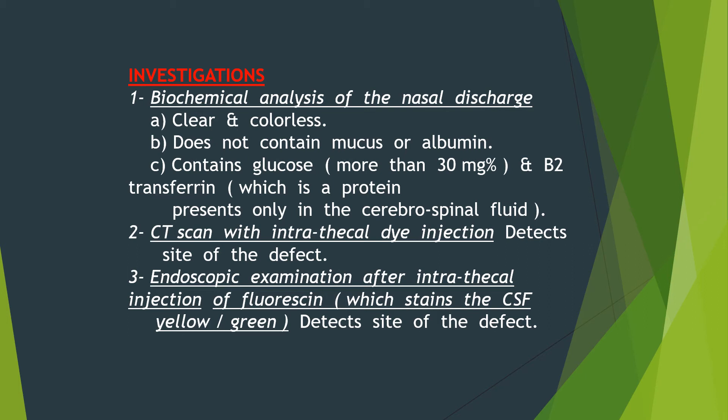To investigate such a case, biochemical analysis of the nasal discharge should be done. It will be clear, colorless, does not contain mucus or albumin, and contains glucose more than 30 milligrams percent, and beta-2 transferrin, which is a protein present only in cerebrospinal fluid. CT scan with intrathecal dye injection detects the site of the defect, and endoscopic examination with intrathecal injection of fluorescein — which stains the CSF yellow or green — also detects the site of the defect.